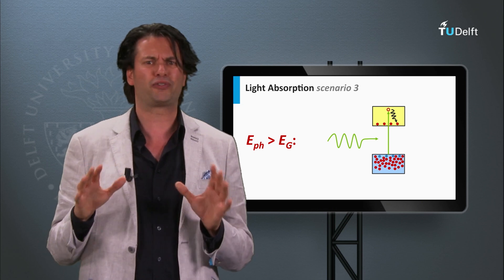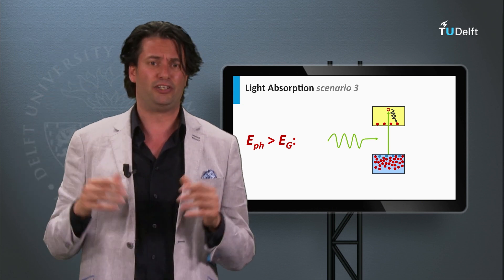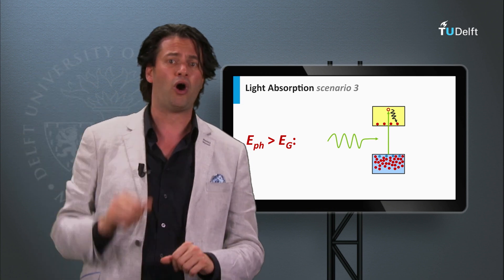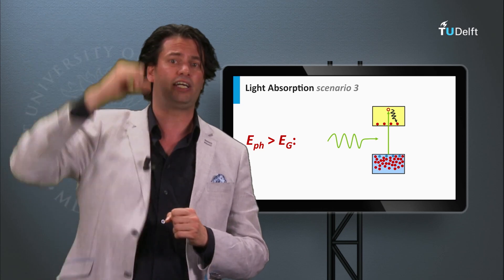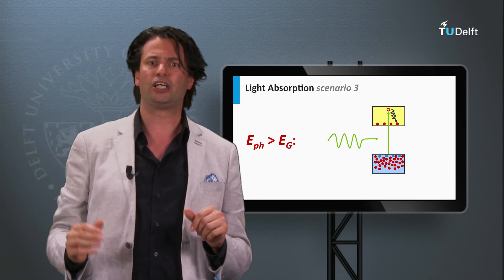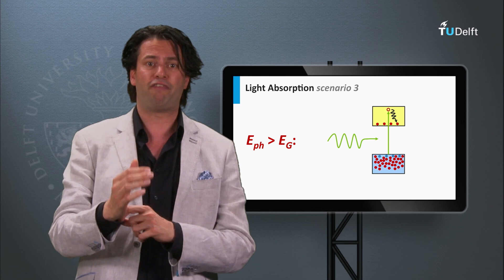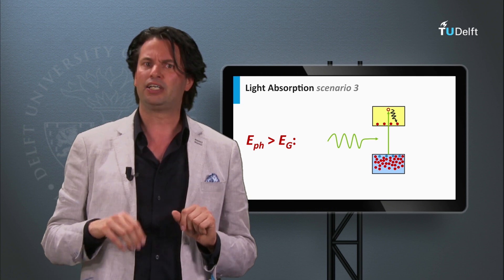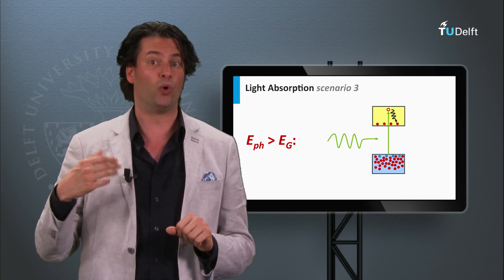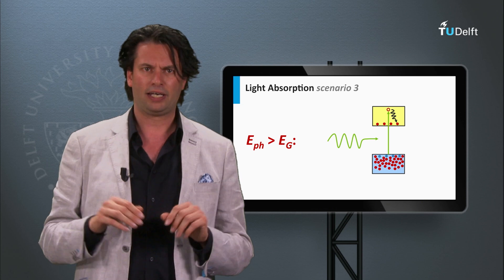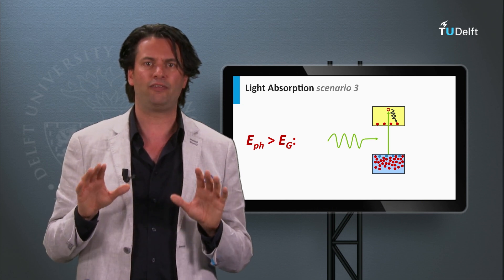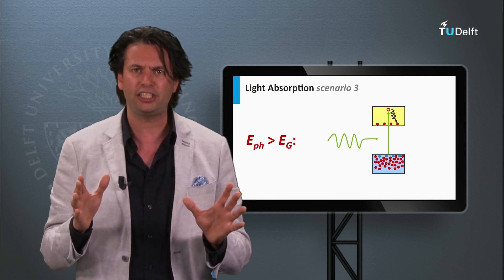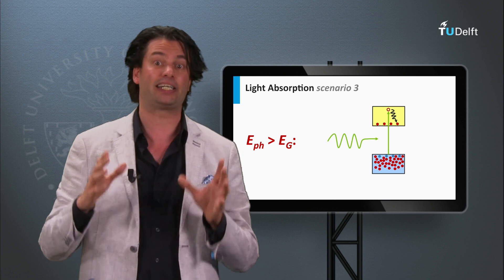Another situation is when the photon has an energy much larger than the band gap. This photon can excite an electron at an energy level deeper in the valence band into the conduction band, or an electron to a higher energy level in the conduction band. In these situations, the hot electrons or holes very fast relax back to the lower energy positions — the bottom of the conduction band for the electron, and the top of the valence band for the hole. This extra energy is released as heat. So the rest energy, which is the photon energy minus the band gap energy, ends up as heat.